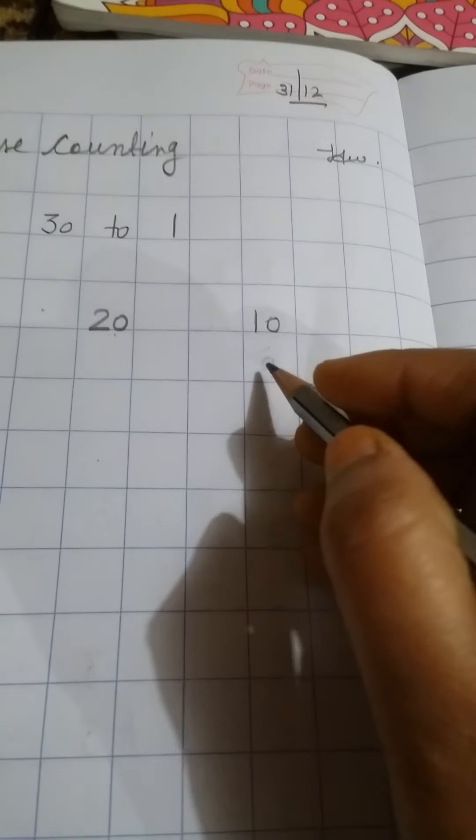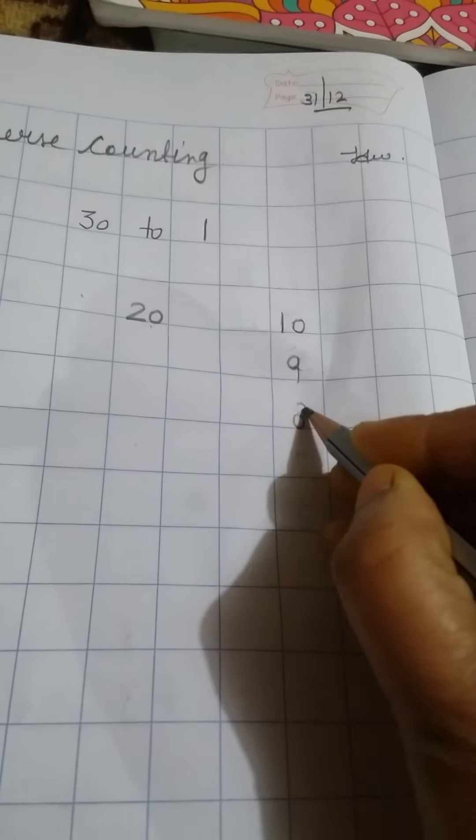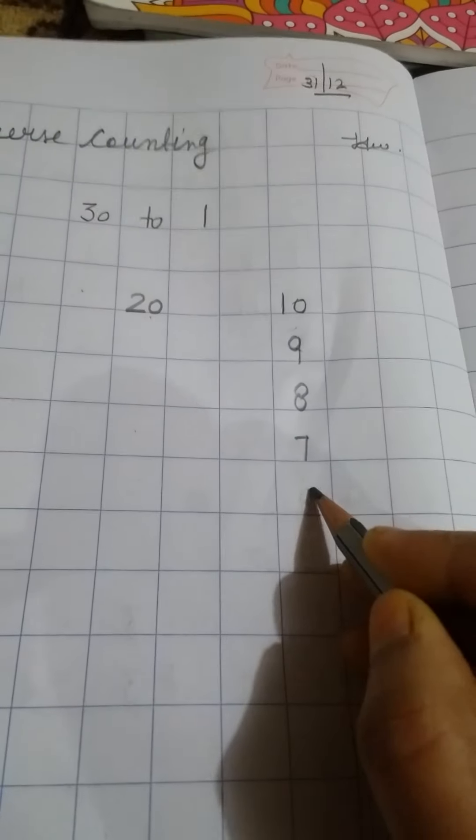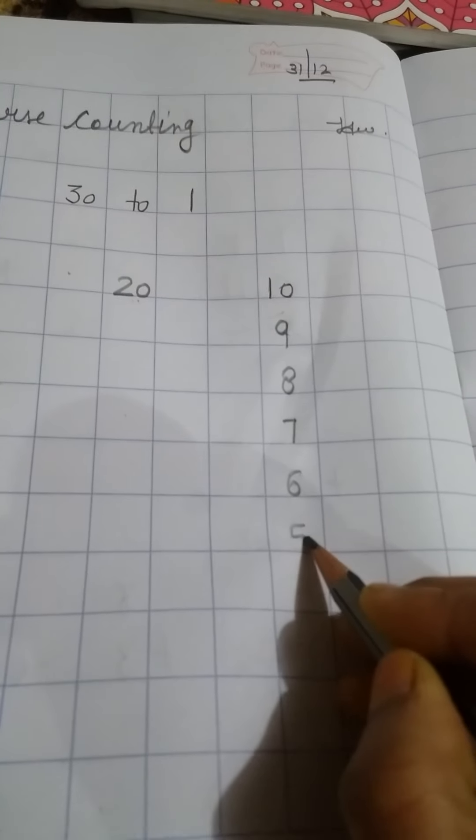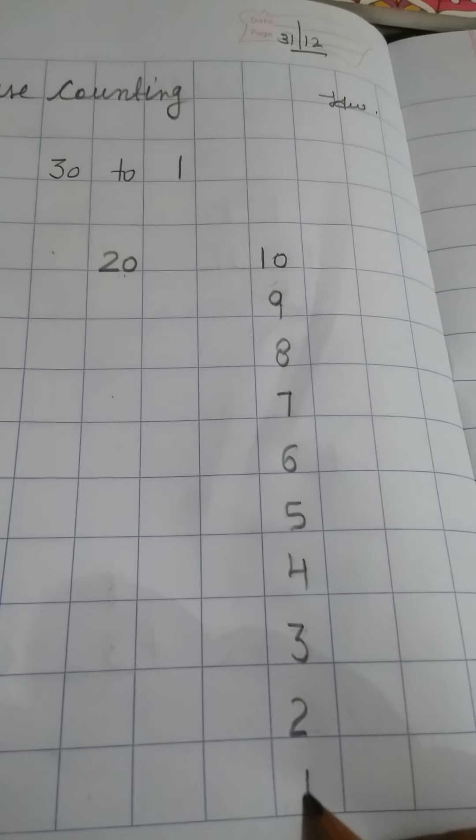Now you have to write here 9, 8, 7, 6, 5, 4, 3, 2, 1.